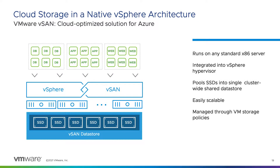vSAN is VMware's software-defined storage solution built from the ground up for vSphere virtual machines. It abstracts and aggregates locally attached disks in a vSphere cluster to create a storage solution that can be provisioned and managed from vCenter and the vSphere web client. vSAN is hypervisor-converged — storage and compute for VMs are delivered from the same x86 platform running the hypervisor.